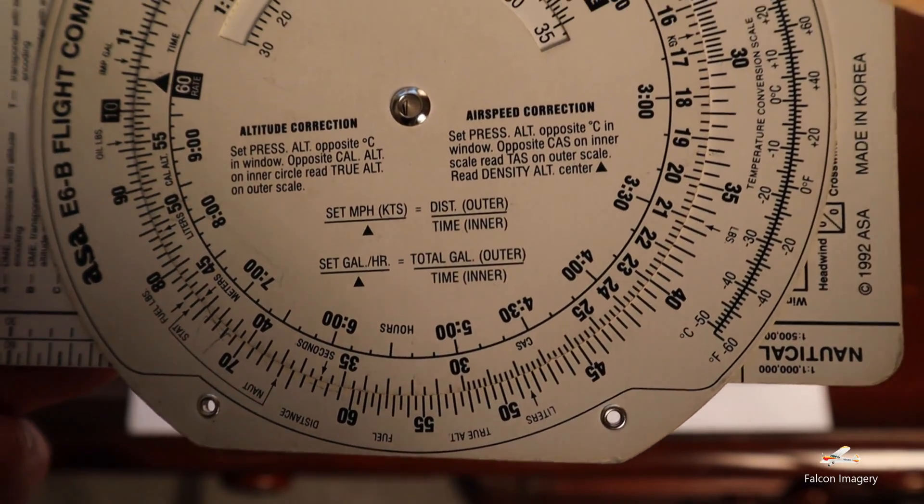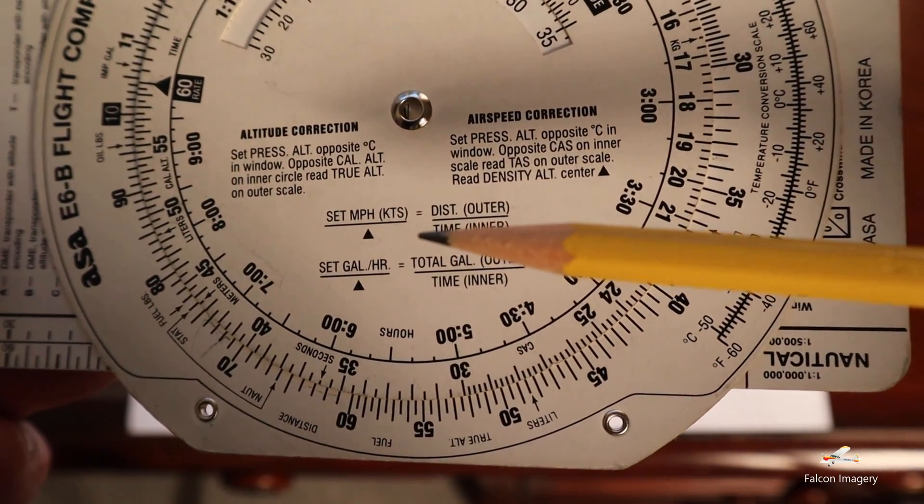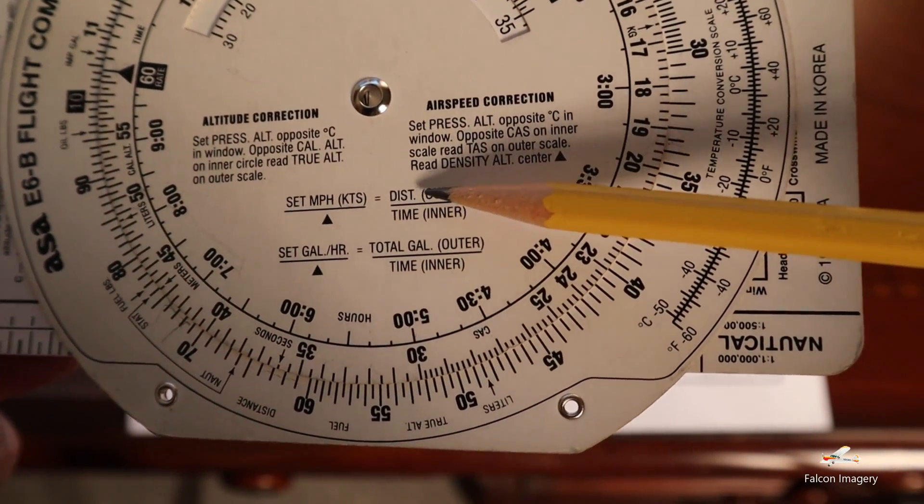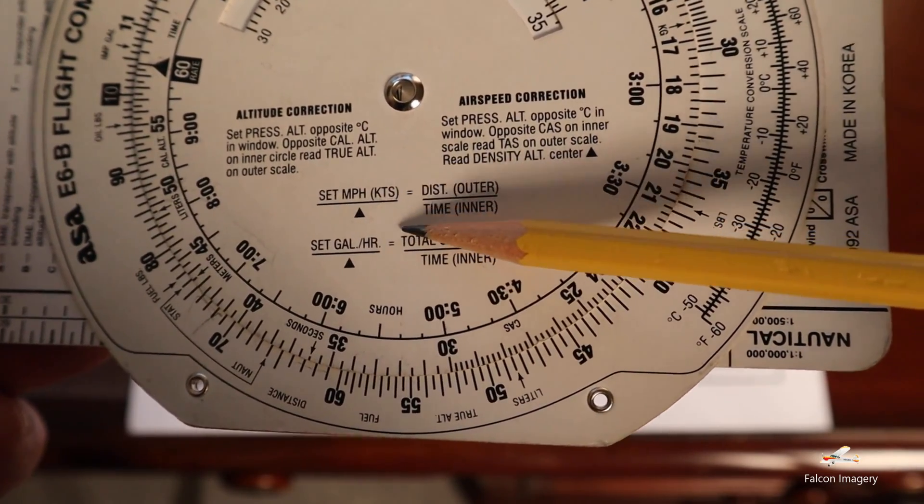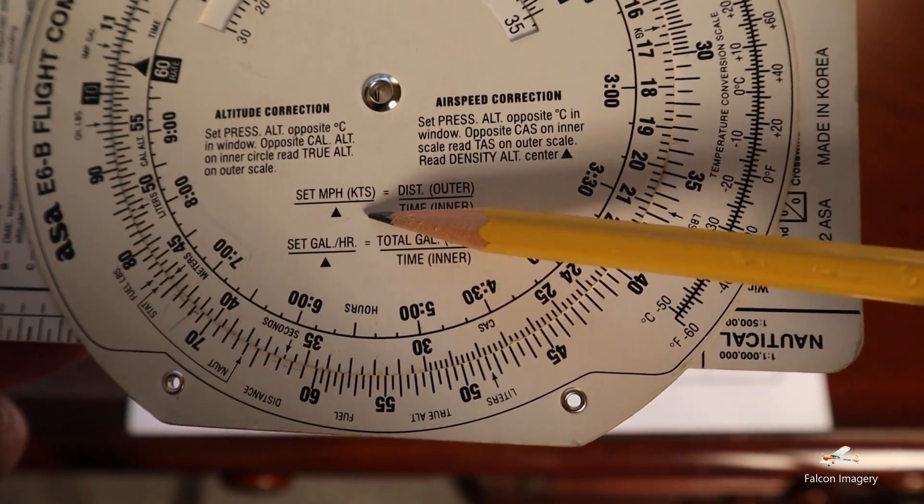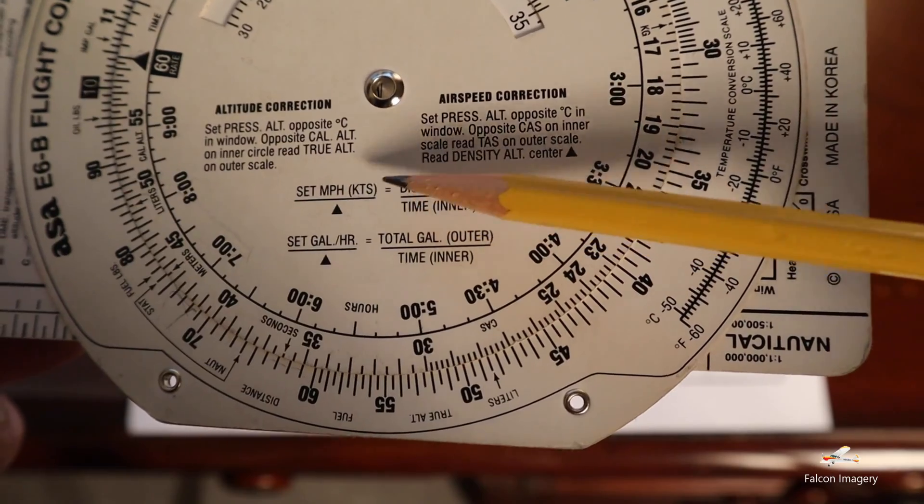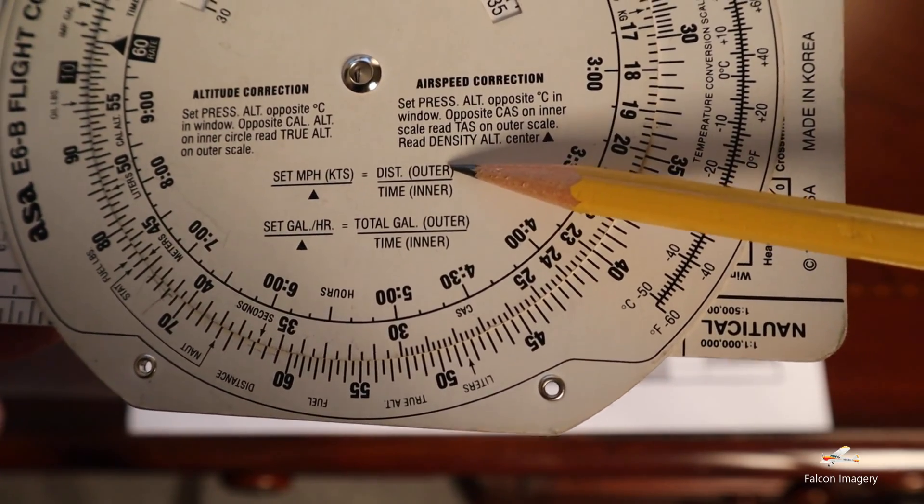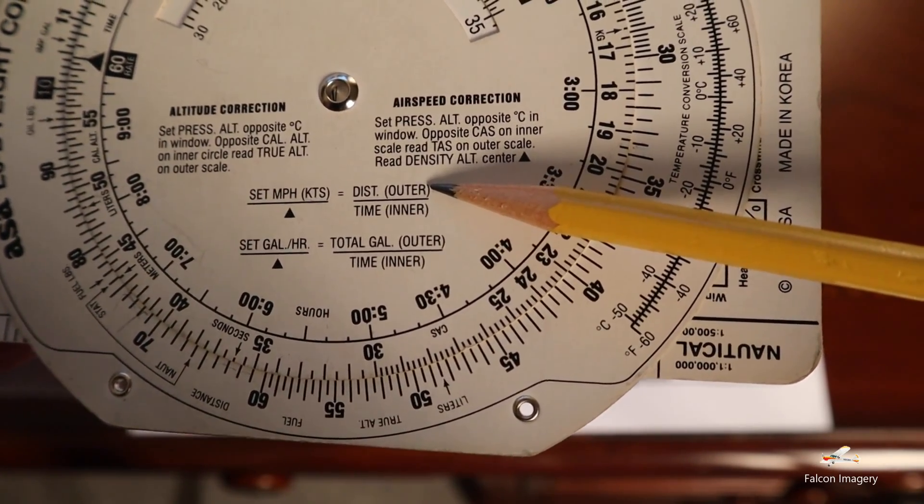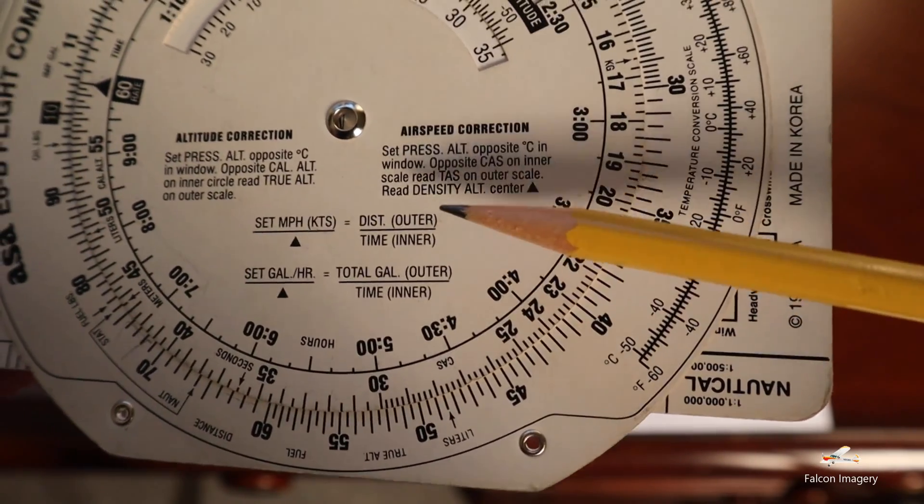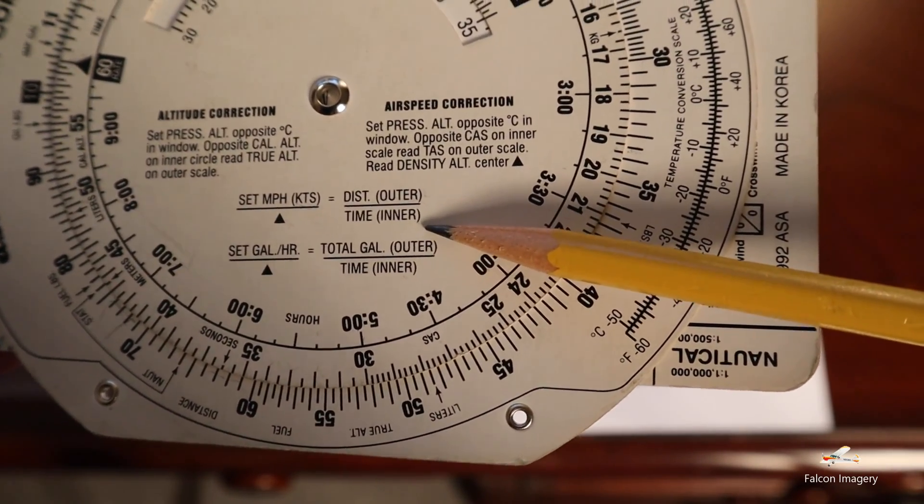The first thing I want you to do is look at this set of instructions here. We want to put the triangle underneath our ground speed, and with that we can then look on the outer ring to determine the distance of the leg that we're flying to determine our time and route between legs.